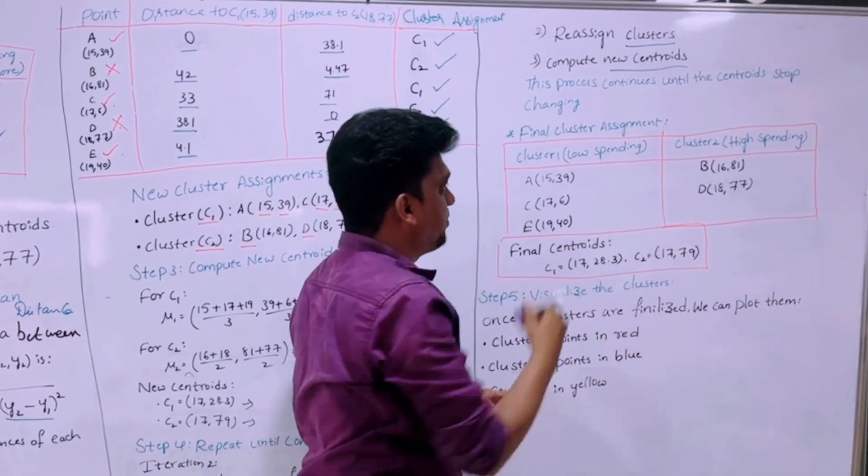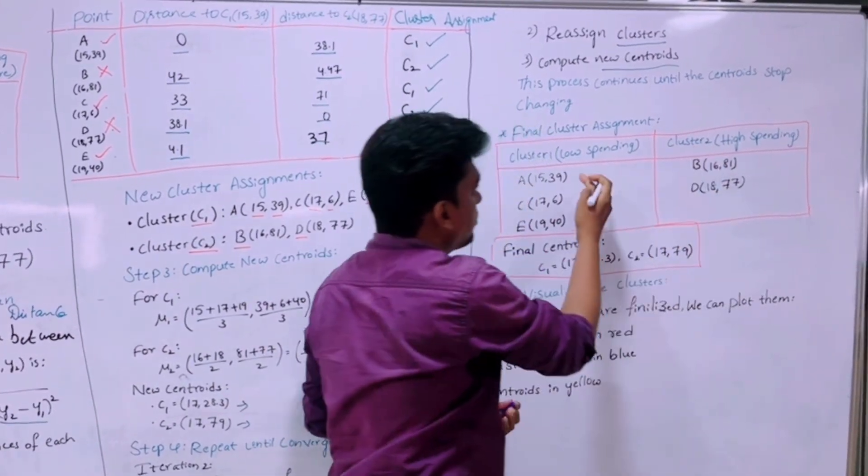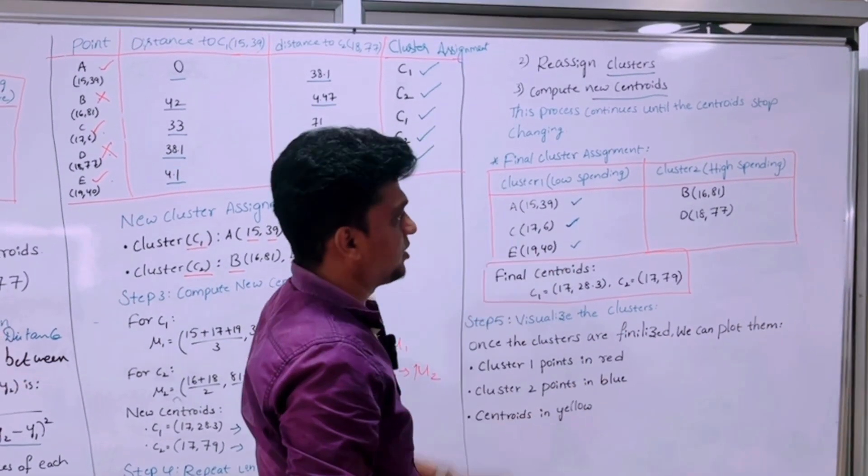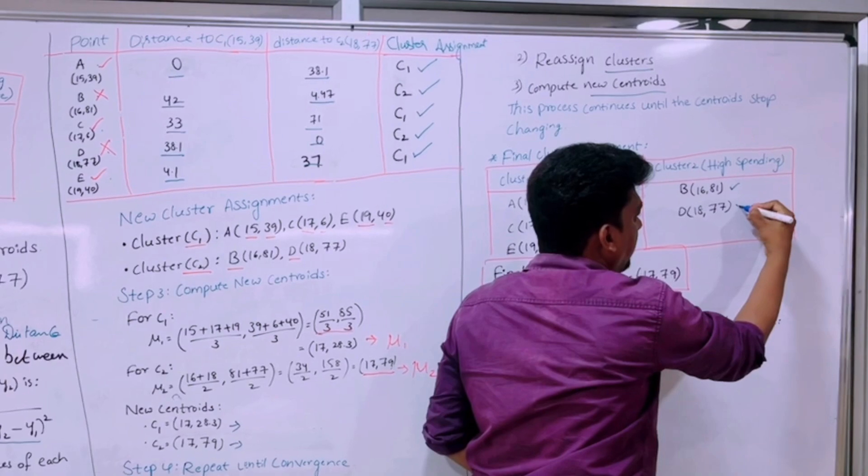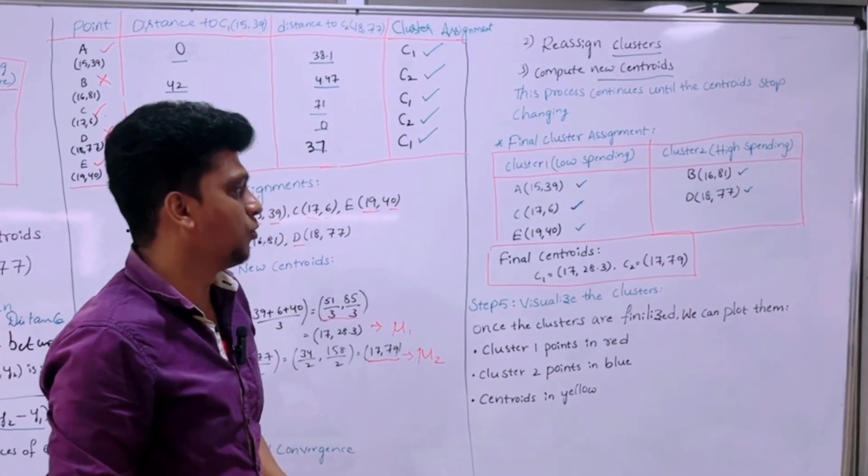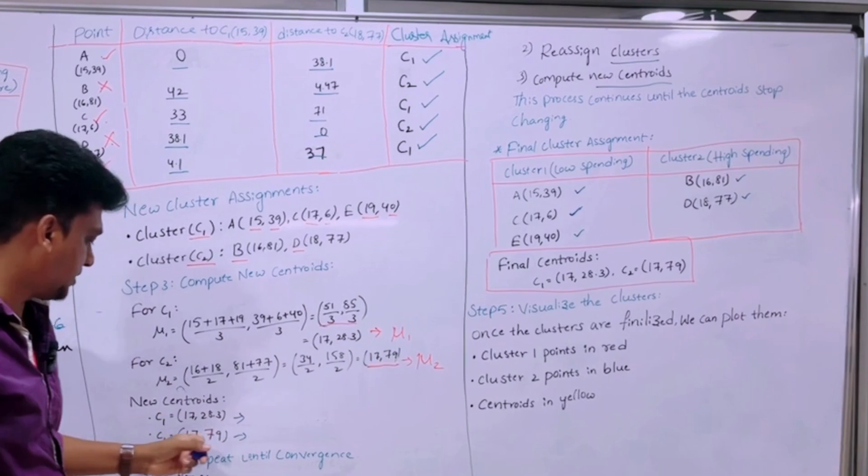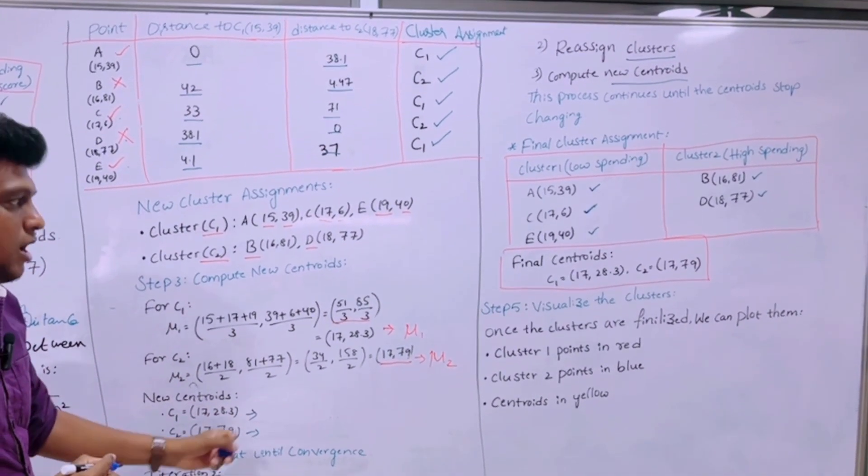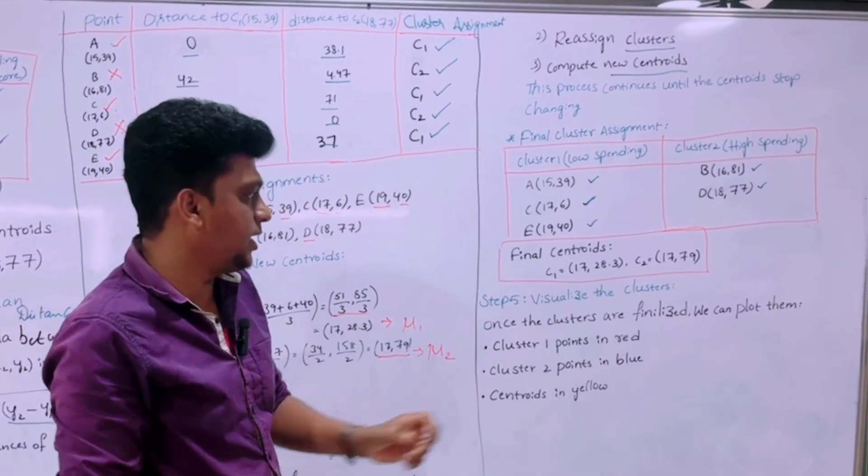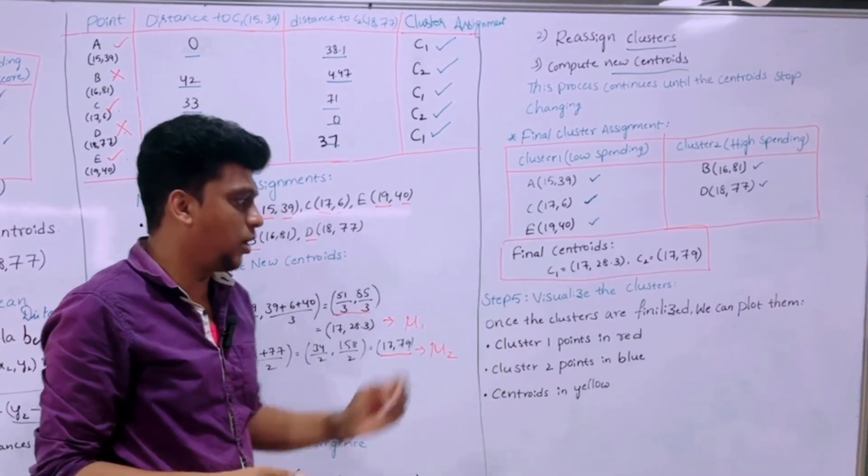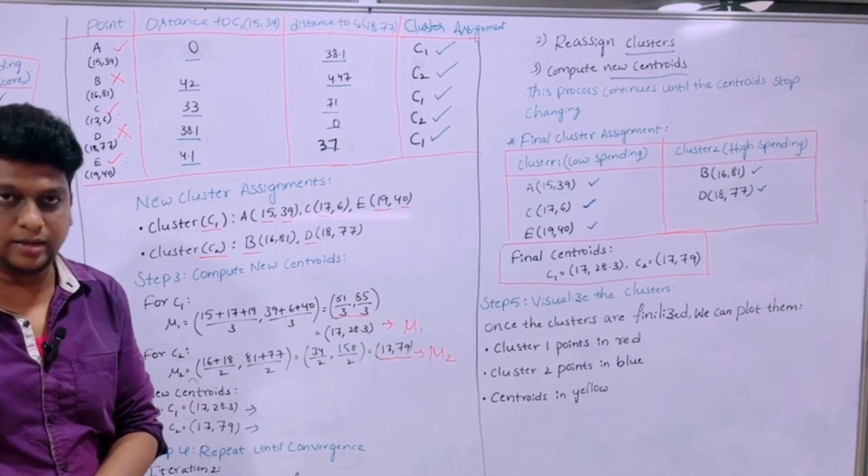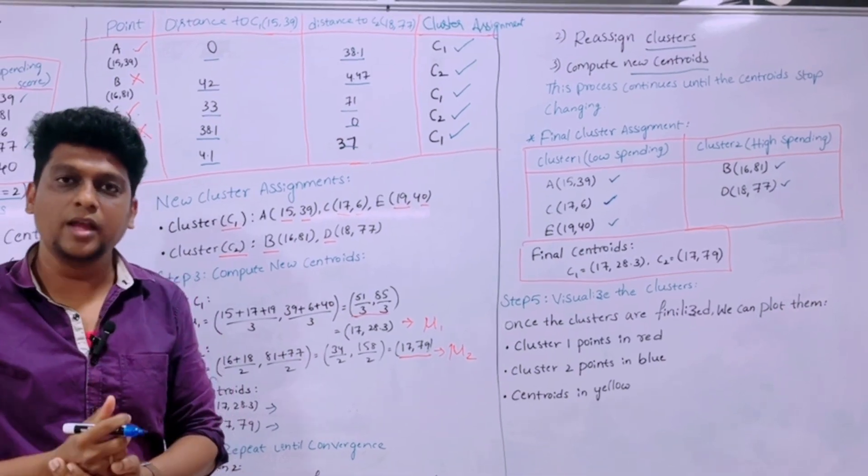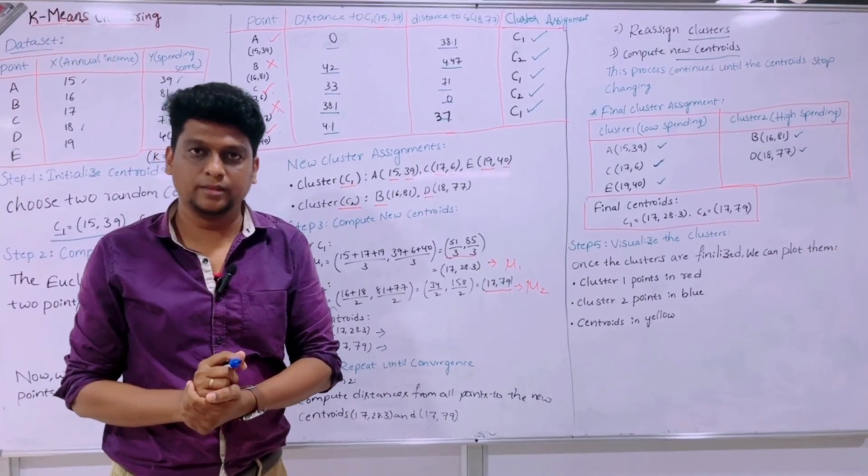So the final cluster has been assigned as cluster 1 and cluster 2. So this is low spending and this is high spending. So A, C, and E belong to cluster 1 and B and D belong to cluster 2. So the final centroids can be represented as C1: 17 comma 28.3 and C2: 17 comma 79. Finally we can visualize the clusters, cluster 1 in one color and cluster 2 in another color. Then we can represent the centroid in yellow color. So this is how the concept of K-means clustering works. Thank you for watching the video.